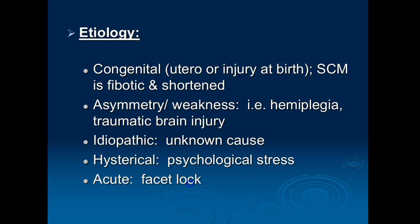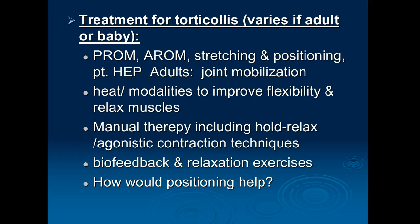Treatment will vary a little depending on whether you're dealing with an adult or a baby. For all patients: passive range of motion, active range of motion, and lots of stretching and positioning. For adults, a home exercise program is very important. For babies or young children, that home exercise program should be carried out by the caregiver or parent. Heat and modalities help improve flexibility and relax muscles. In adults we can add electrical stimulation or ultrasound. Manual therapy works really well — we can use hold-relax techniques and agonistic contraction to help lengthen the affected sternocleidomastoid muscle.